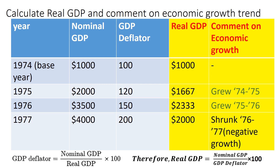So our real GDP for the base year is also 1000. The point to note is that for the base year, nominal GDP and real GDP will always be the same because the GDP deflator is 100. If you get different numbers between nominal and real GDP for the base year, you have calculated something incorrectly — double-check your calculation.